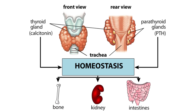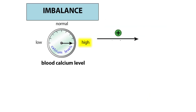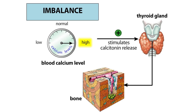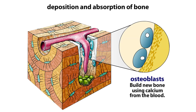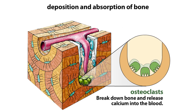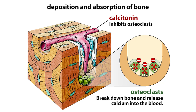Elevation of blood calcium levels triggers certain cells in the thyroid gland to release calcitonin into the bloodstream. Calcitonin acts to lower the concentration of calcium in the blood through its effect on bone, where 99% of the body's calcium can be found. Osteoblasts take up circulating calcium and deposit new bone, whereas osteoclasts break down the bone and release calcium into the bloodstream. Calcitonin decreases the activity of osteoclasts, thereby shifting the balance of bone turnover to favor deposition of new bone and removal of calcium from the blood.